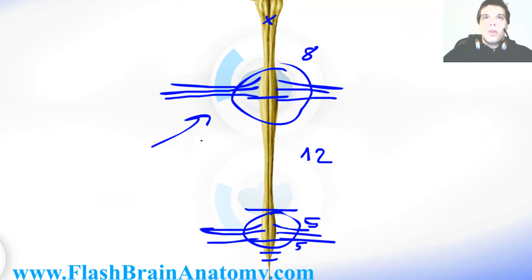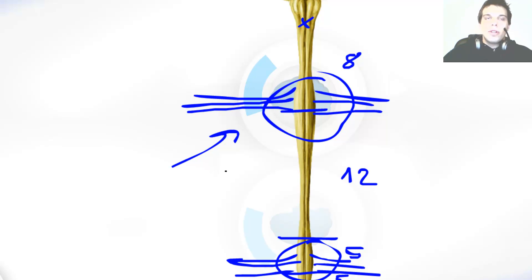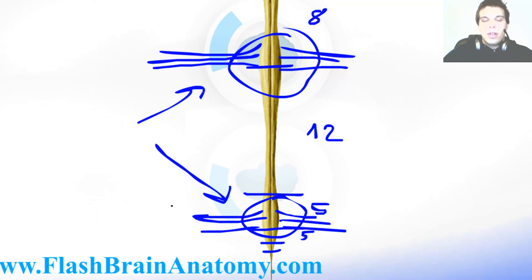Over here at the cervical part they leave for the upper extremities, for the upper limbs. Down there at the lumbar part they leave for the lower extremities, the lower limbs.